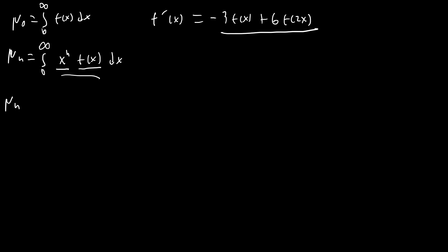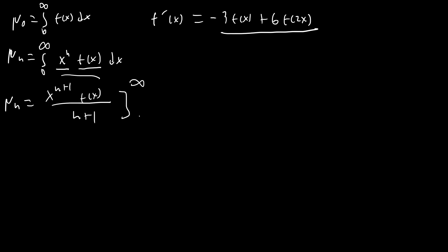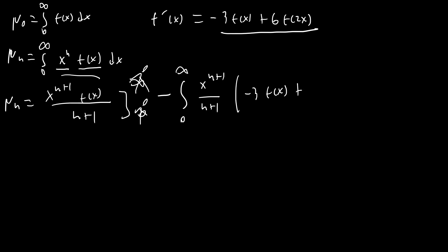We have μ(n) equals the integral from zero to infinity — first we do our integration by parts. It's going to be x^(n+1) f(x) over (n+1) evaluated at infinity and at zero. Since f(x) decays rapidly, similar to e^(−√x), this boundary term vanishes at both limits. Then we subtract the integral from zero to infinity of x^(n+1) over (n+1) times (−3f(x) + 6f(2x)) dx.